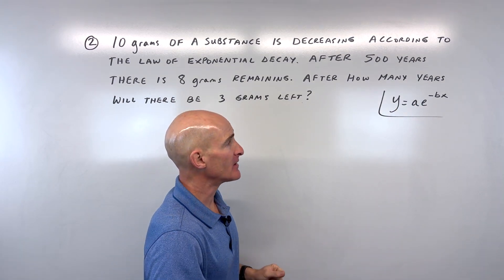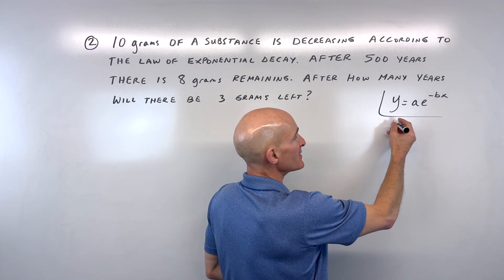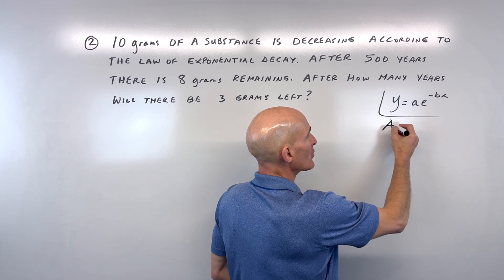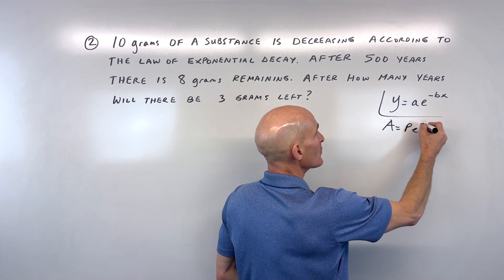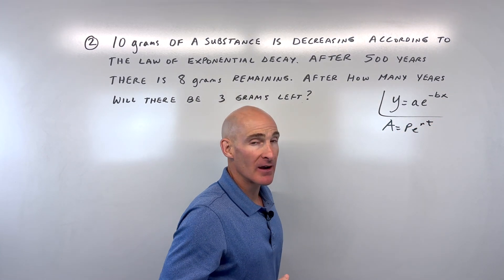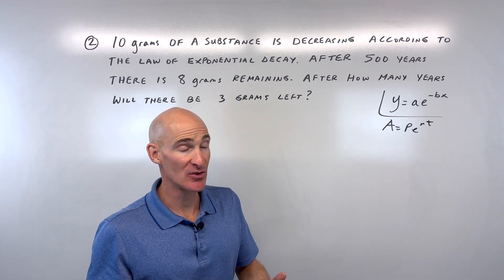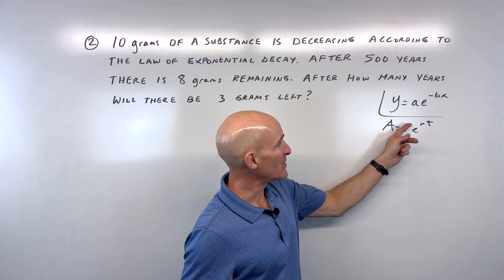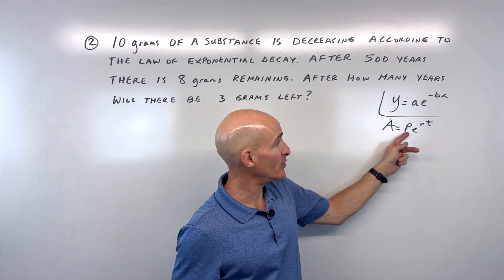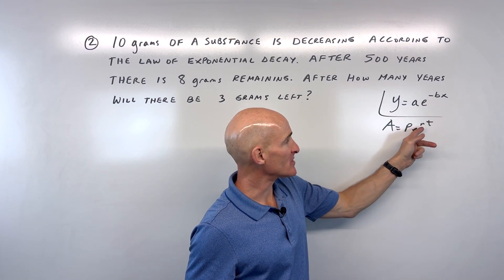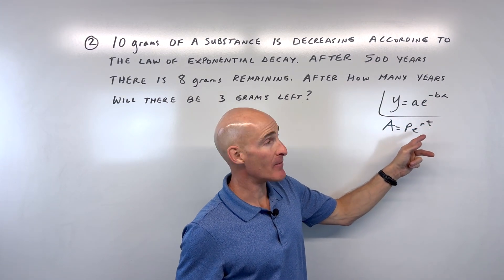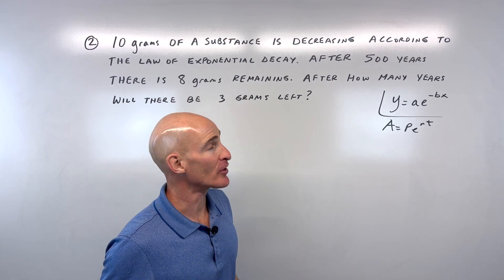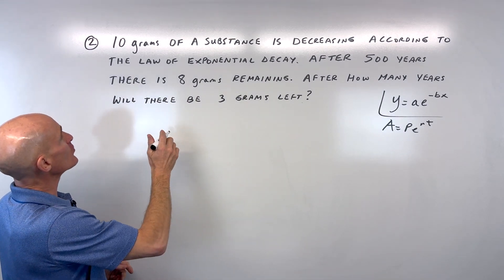For exponential decay we'll use this formula here. I wanted to point out that these exponential growth and decay formulas look a lot like the formula for compound interest when compounding continuously - the PERT formula. P is the starting amount, B is the rate, T is time, and you have that natural base e. Very similar.